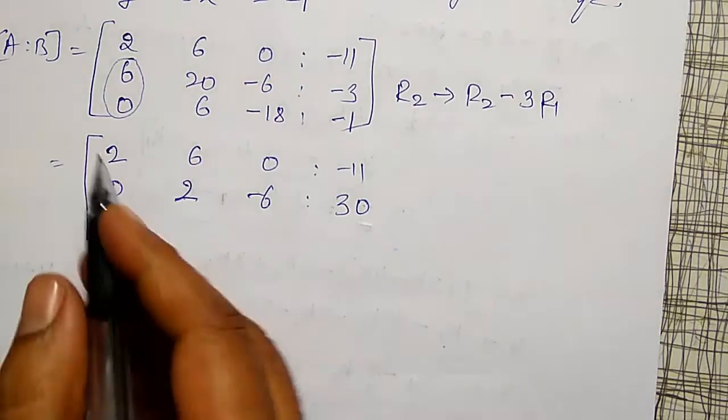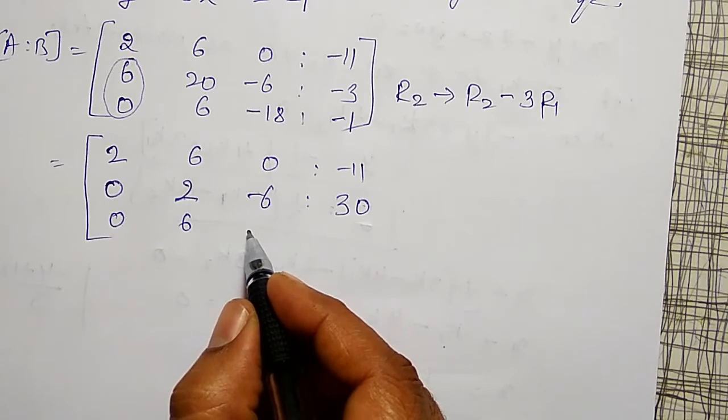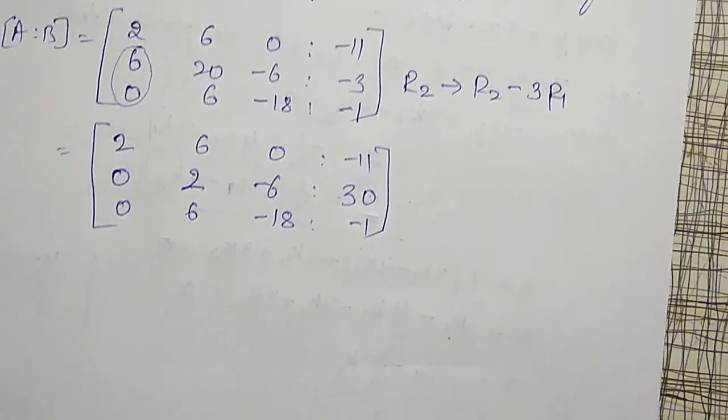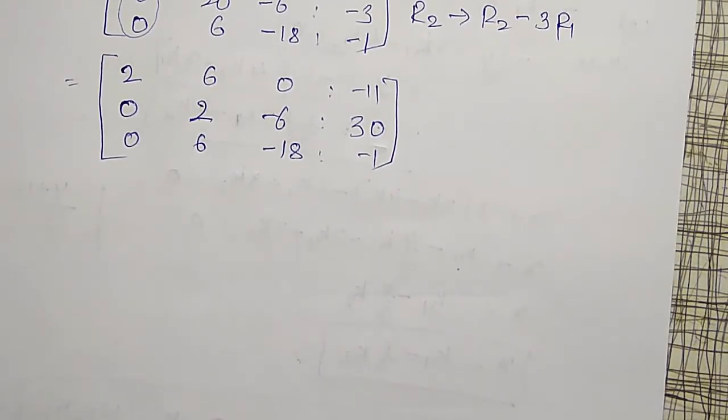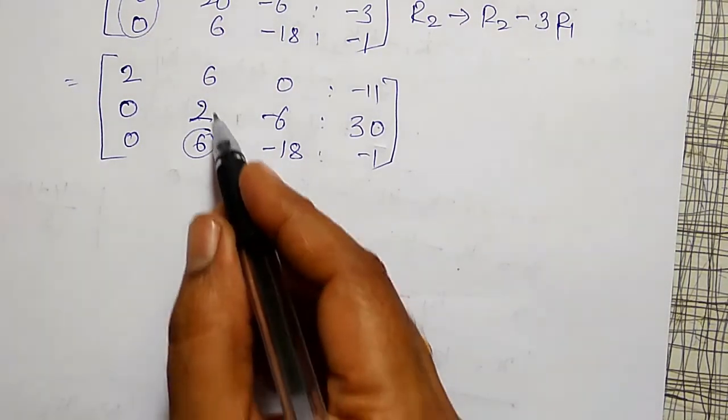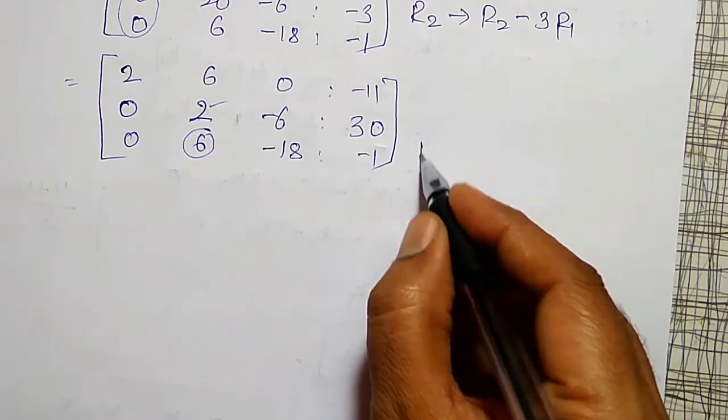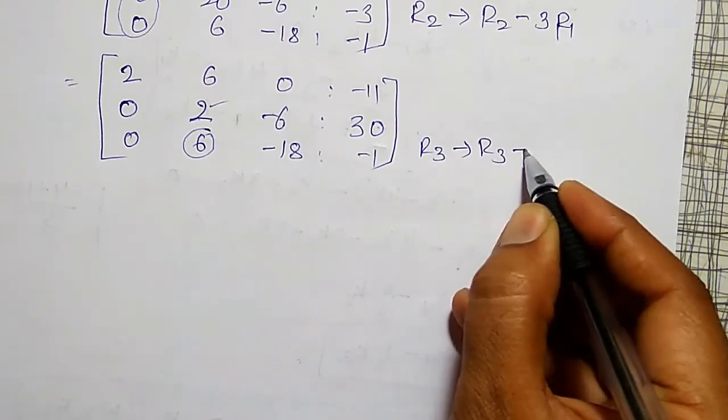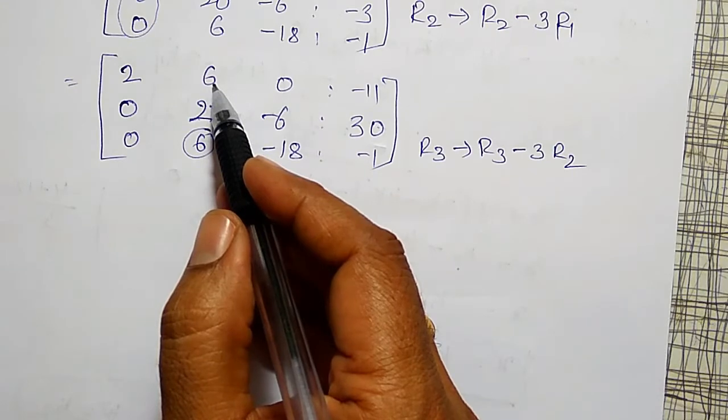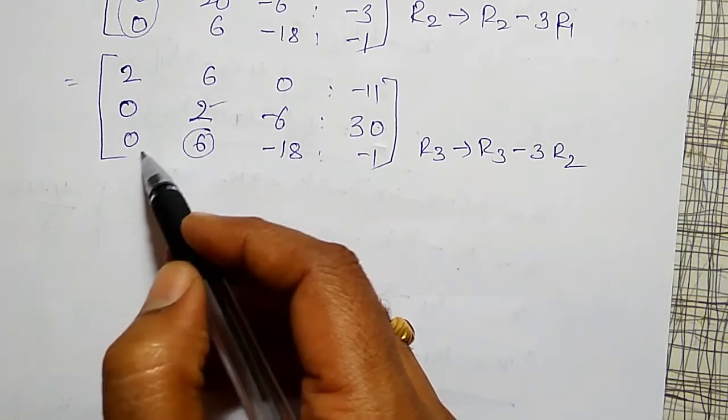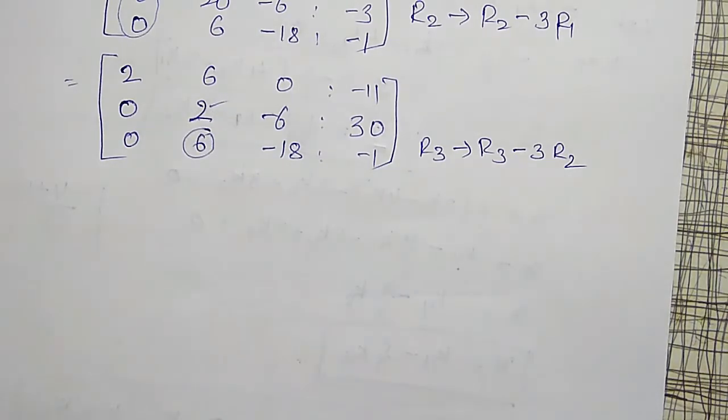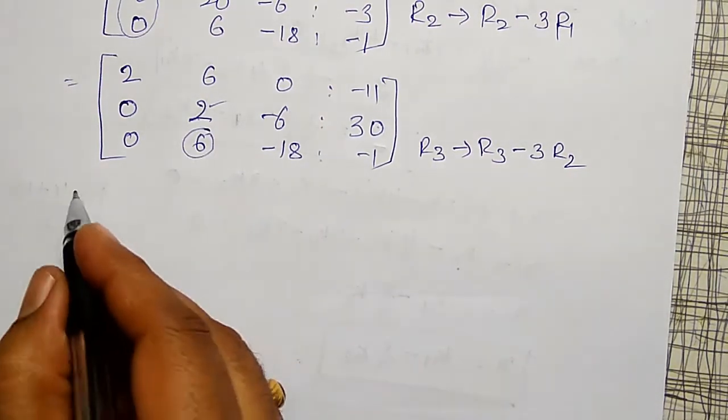Third row operation I am now doing, as it is 0, 6, minus 18, minus 1. To reduce into upper diagonal matrix, I have to make this element 0 now. Lower diagonal element as a 0. To make this 0, I have to use 2 only. Therefore R3 is replaced by R3 minus 3 times R2. Don't use this one. 6 minus 6 automatically equal to 0. But 0 minus 2, this will not reduce to 0. That's why I have to use this element only.